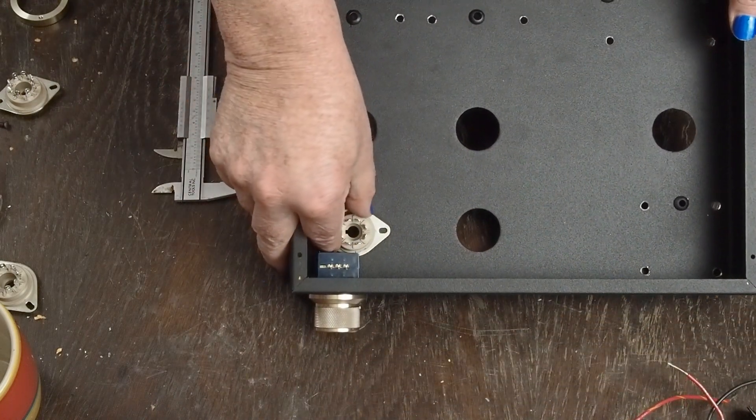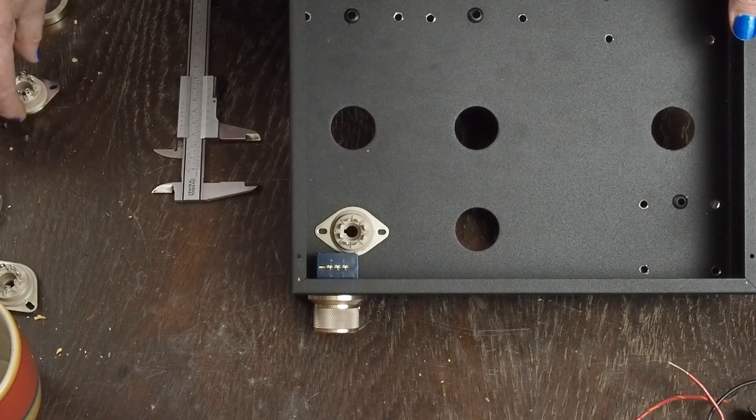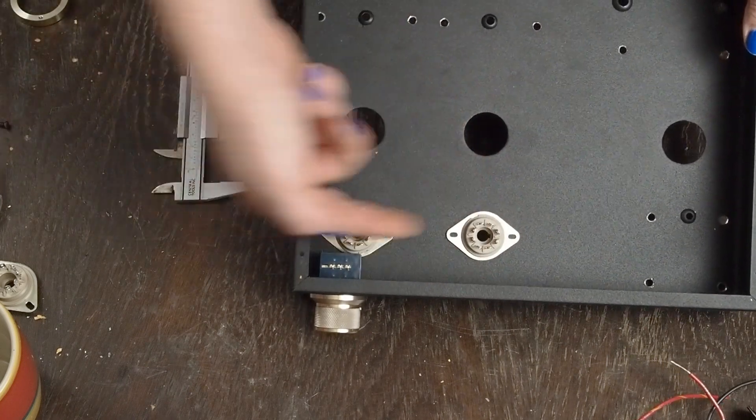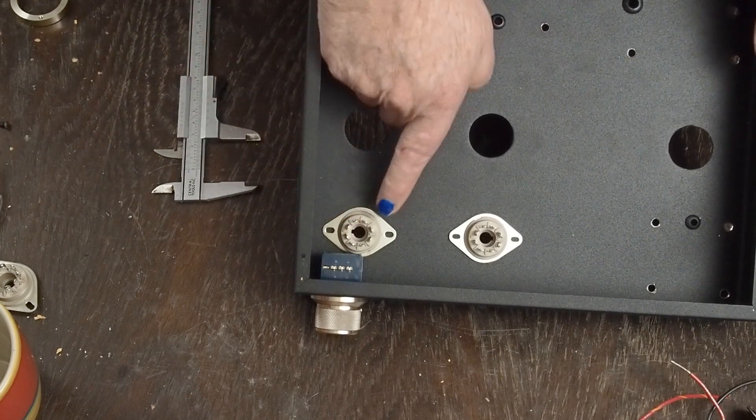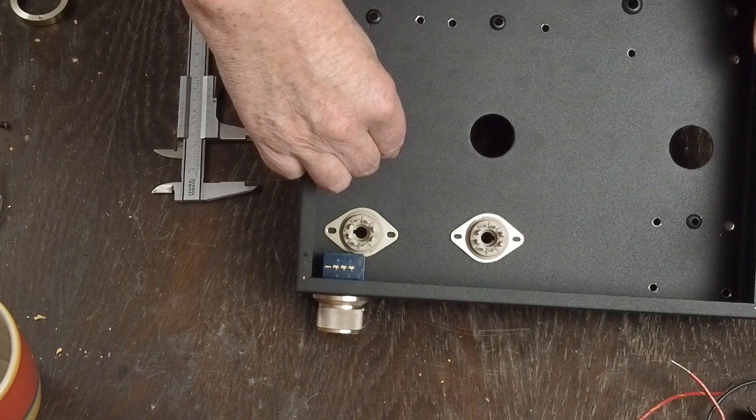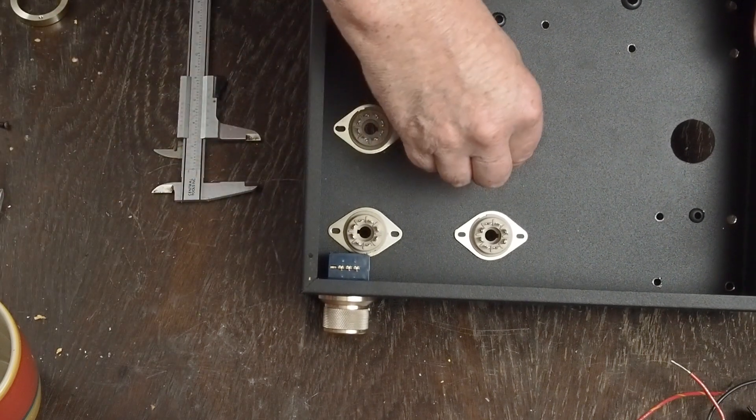We're going to orient the tubes like this with the keyways facing this way on the driver tube, so the heaters are going to be like this. Then these are also going to be mounted in this orientation.